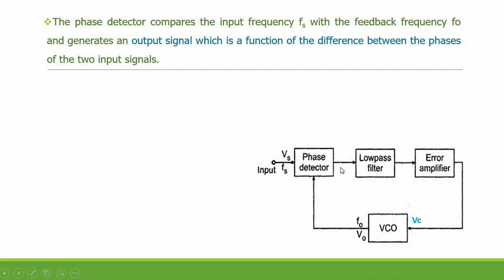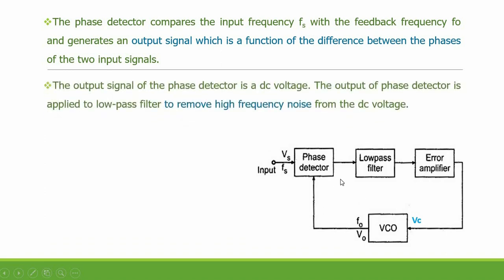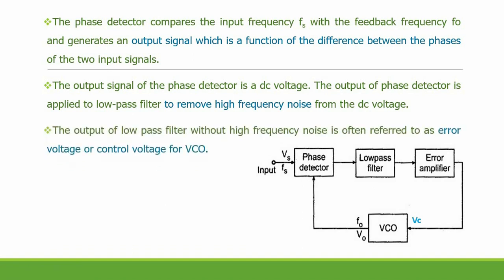The phase detector compares the input frequency FS with the feedback frequency F naught, and generates an output signal which is a function of the difference between the phase angle of the two input signals. This output is a DC voltage, which is applied to the low-pass filter to remove any high frequency noise that may be present in the DC voltage.